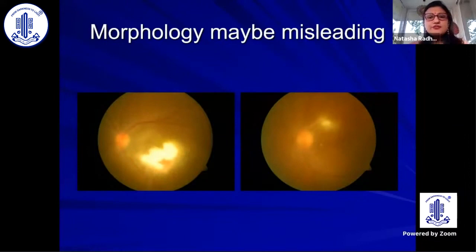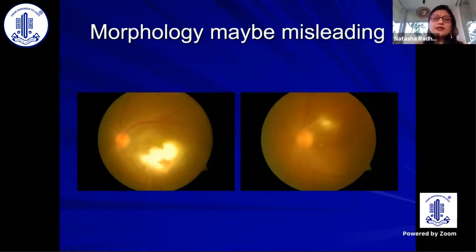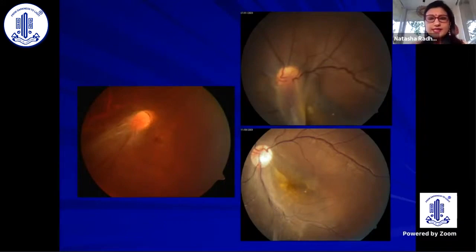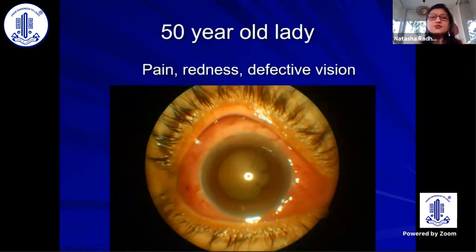The morphology itself may be misleading. Two eyes may look similar to the naked eye, but one is a candida endophthalmitis and the other is toxoplasmosis. You cannot go with morphology alone. Similarly, a falciform fold with traction in the periphery can occur due to various reasons. Morphology alone is not enough to make a diagnosis.